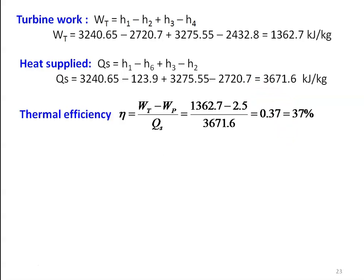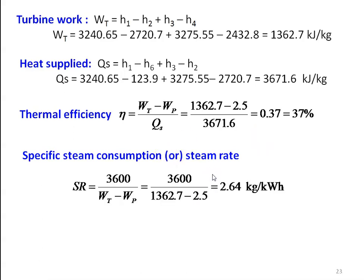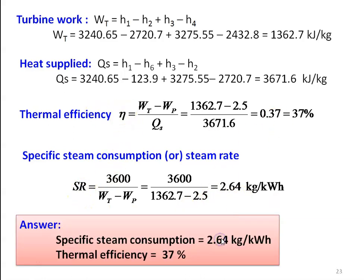Thermal efficiency η = (Wt − Wp) / Qs = (1362.7 − 2.5) / 3671.6 = 37%. Specific steam consumption SR = 3600 / (Wt − Wp) = 3600 / (1362.7 − 2.5) = 2.64 kg/kWh. The answer: specific steam consumption is 2.64 kg/kWh and thermal efficiency of the cycle is 37%.